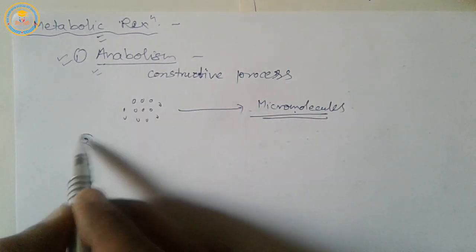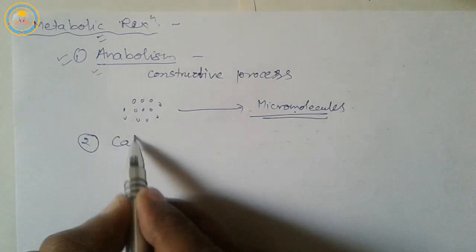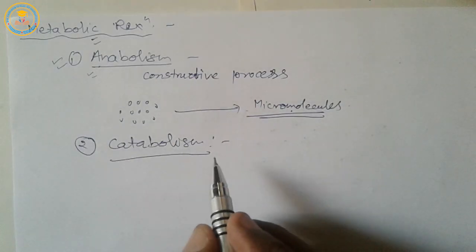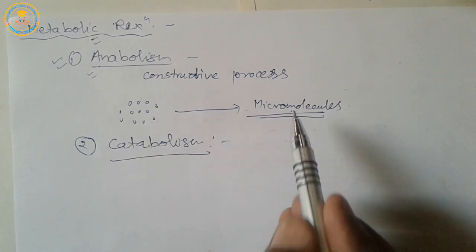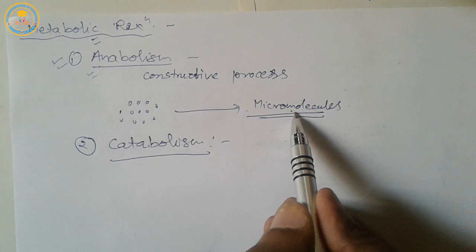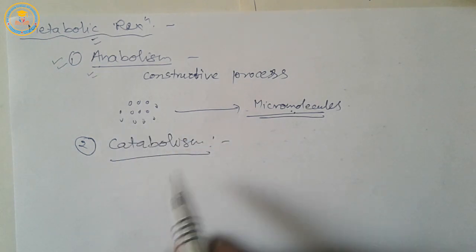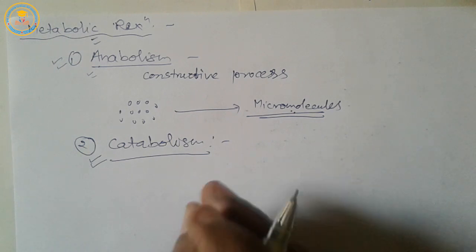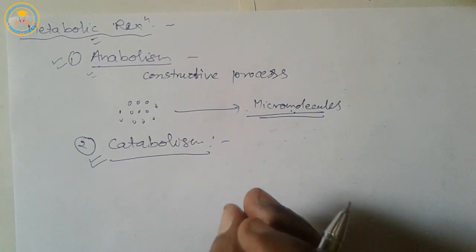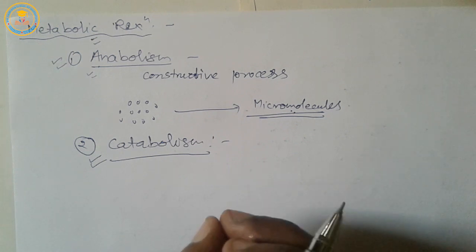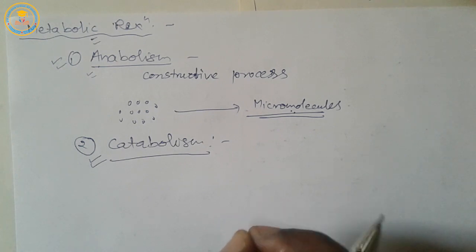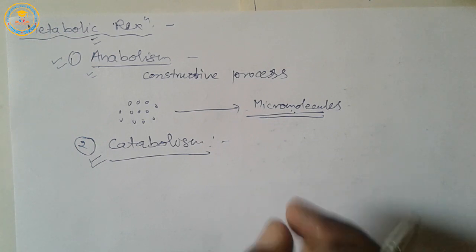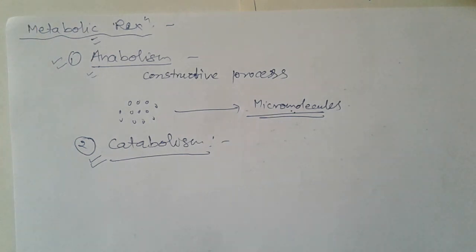The second type of metabolic reaction is catabolism. A metabolic process in which complex molecules are broken down into simpler ones with the release of energy is called catabolism. It is a destructive process. Catabolism and anabolism take place simultaneously and are related to each other. For example, synthesis of protein from amino acids is an anabolic process, whereas conversion of carbohydrates into CO₂ and water is a catabolic process. I hope you like this video — thanks for your time.